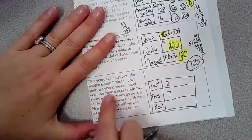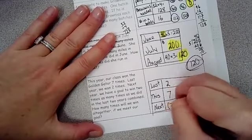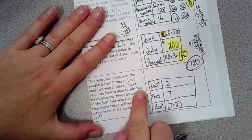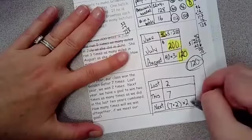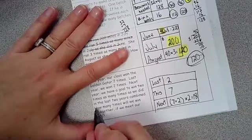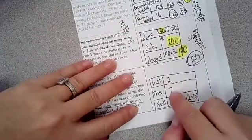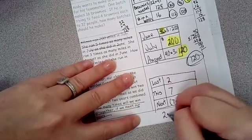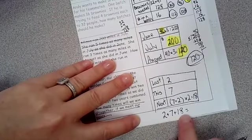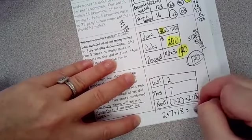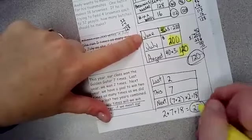Next year we have a goal to win 2 times as much as these two years combined. So you have to take 7, add it to 2, and you have to multiply it by 2. So 7 plus 2 is 9 times 2 is 18. Now, how many times will we win all together if we meet our goal? So you would have to add 2 plus 7 plus 18. 2 plus 7 plus 18 equals, well, 2 plus 7 is 9, and 9 plus 18 would be 27. So there is your answer. You will win it 27 times in all. All right.